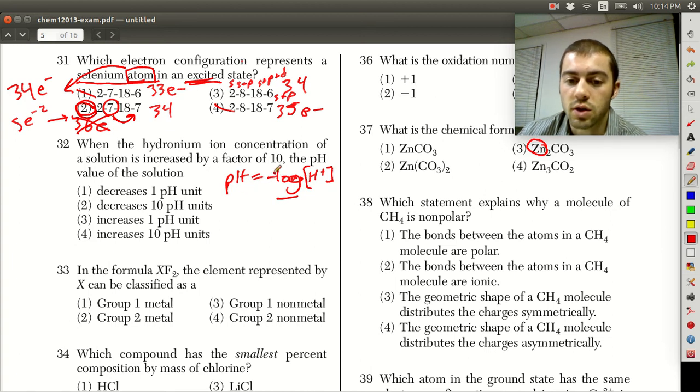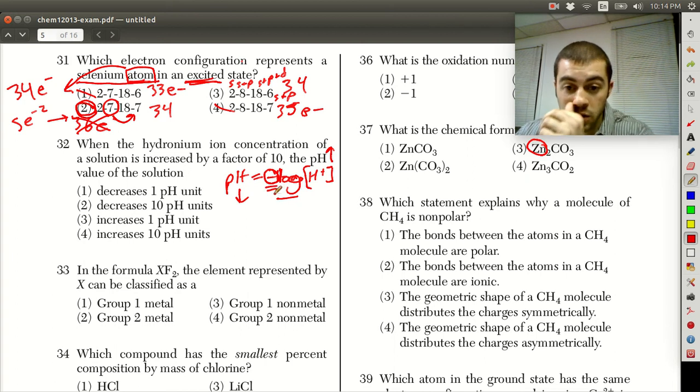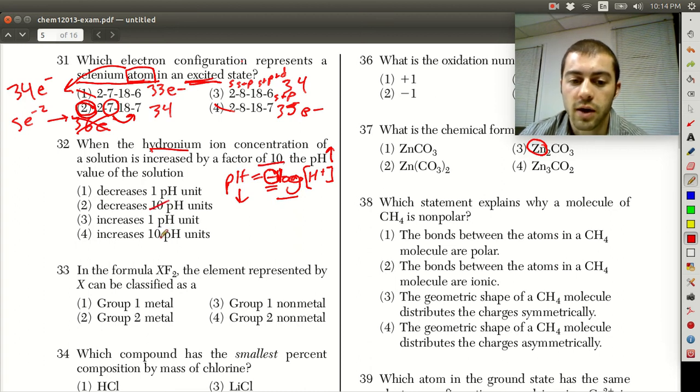It's an inverse relationship as well because of this negative sign here. This is negative log of the H+ concentration. So as H+ increases, pH decreases because this negative sign makes it an inverse relationship. And the log scale tells us that a 10 unit increase in H+ is going to have a 1 unit effect on pH. So if the H+ or the hydronium H3O+ ion concentration increases by a factor of 10, the pH should not be a factor of 10. It should increase or decrease by a factor of 1.